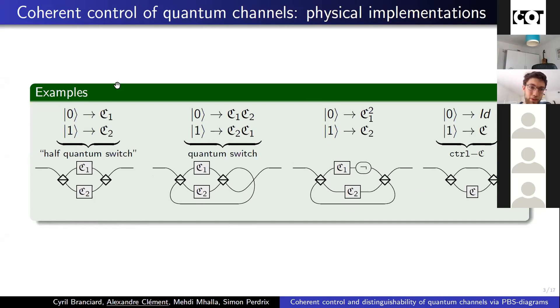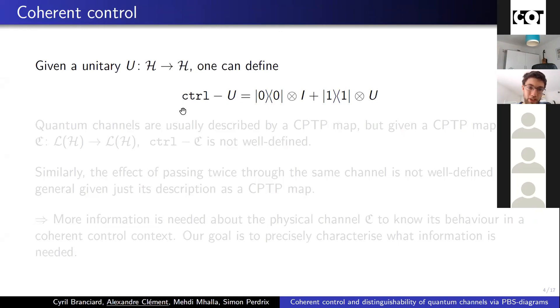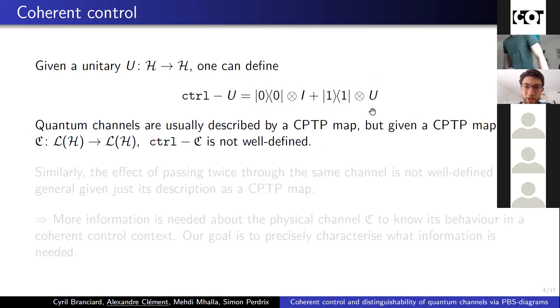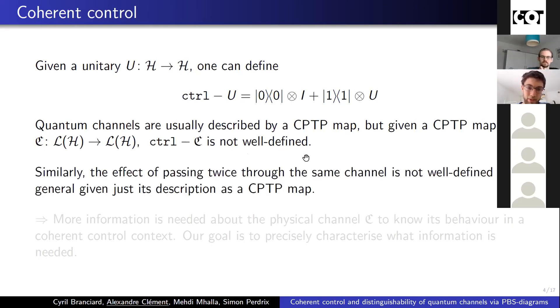So if the channel is unitary, it is quite easy to define its controlled version with the identity and the control qubit. But with a CPTP map, this is not possible, for instance because the phase is not taken into account. Changing, for instance, U into minus U will change this, but this will not be seen by the CPTP map. And similarly, if we pass twice through the same channel, there can be some entanglement with the external environment which will change the result when passing the second time.